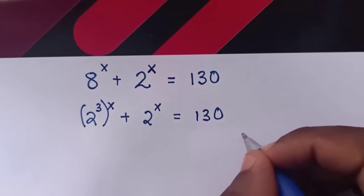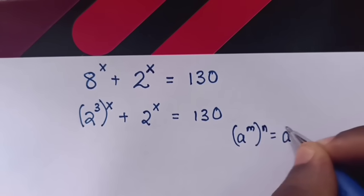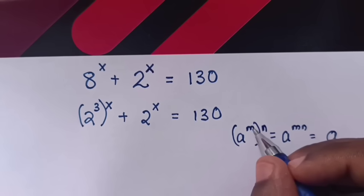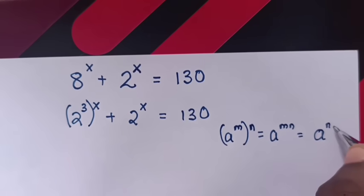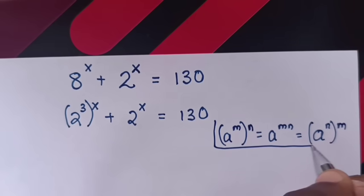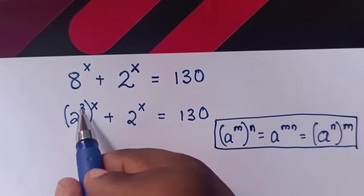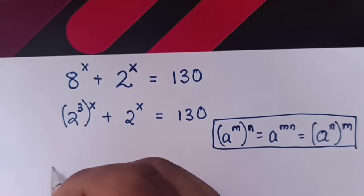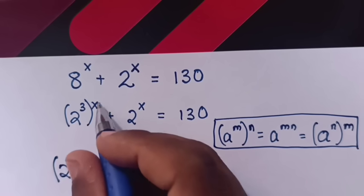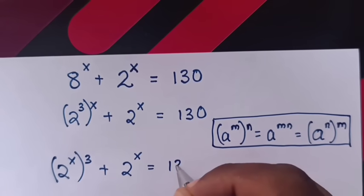We will apply the exponential rule that a power m, bracket power n, is equals to a power mn — we multiply the powers. We exchange the powers inside the bracket, so it will be a power n times bracket power m. So here in our equation, we will exchange the powers. It will be 2 power x inside the bracket and 3 outside the bracket, plus 2 power x is equals to 130.